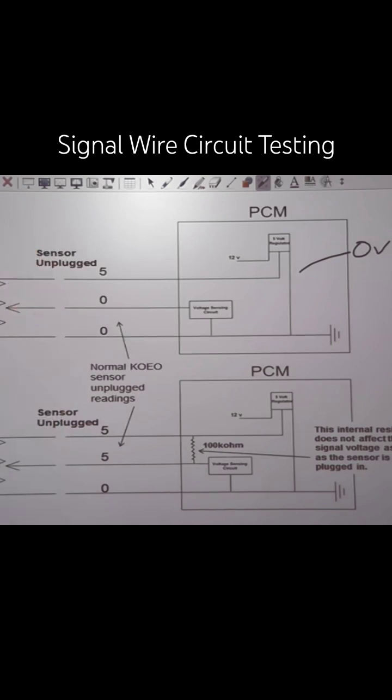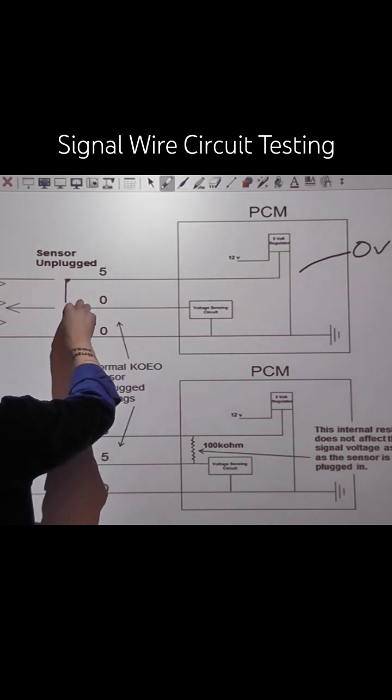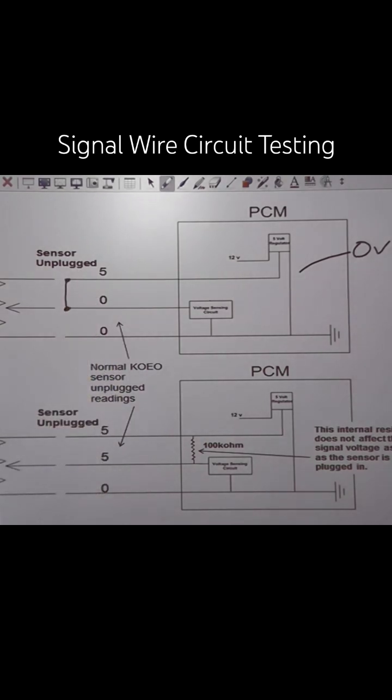We're going to disconnect the sensor. We'll do some voltage measurements too, but we're going to disconnect the sensor and I'm going to jump my five volt reference to my signal wire. I'm not jumping it to ground.